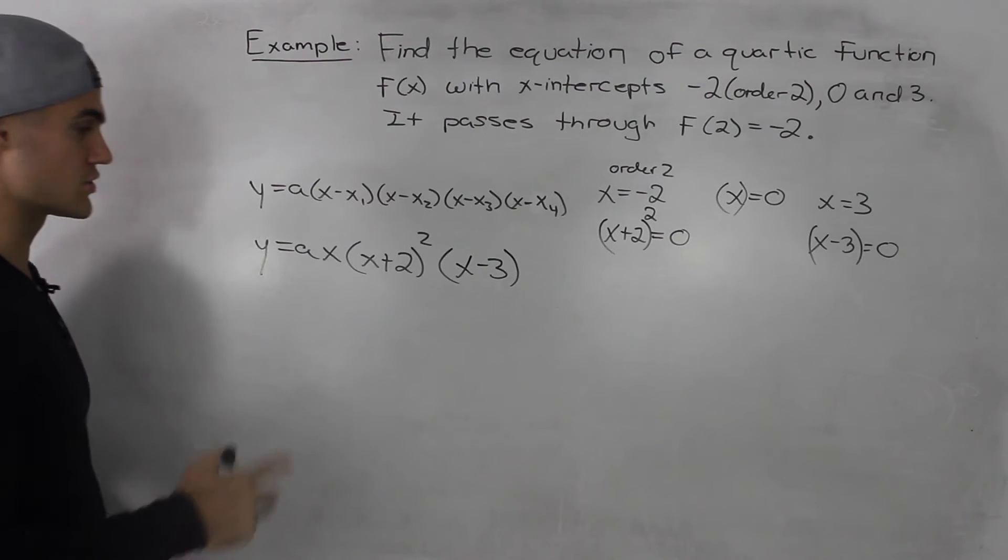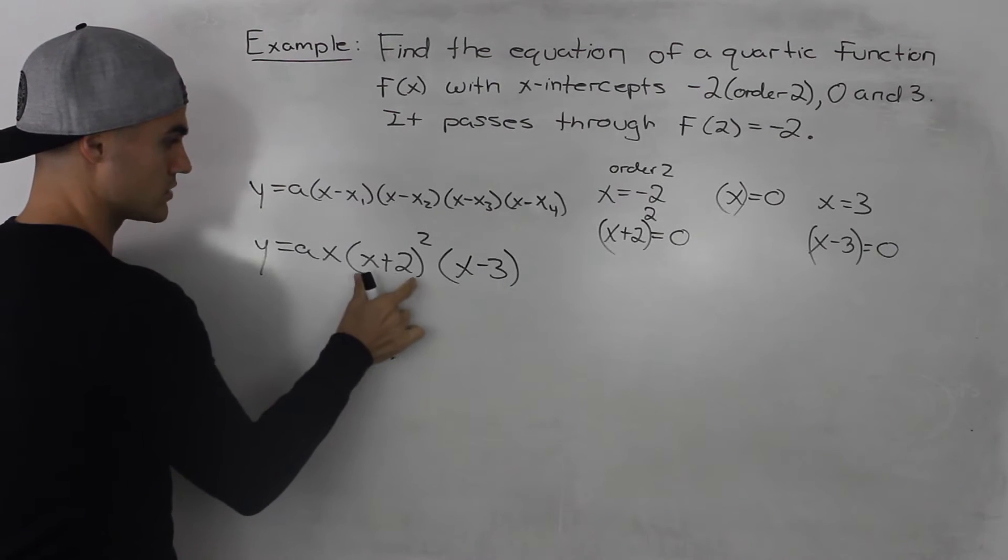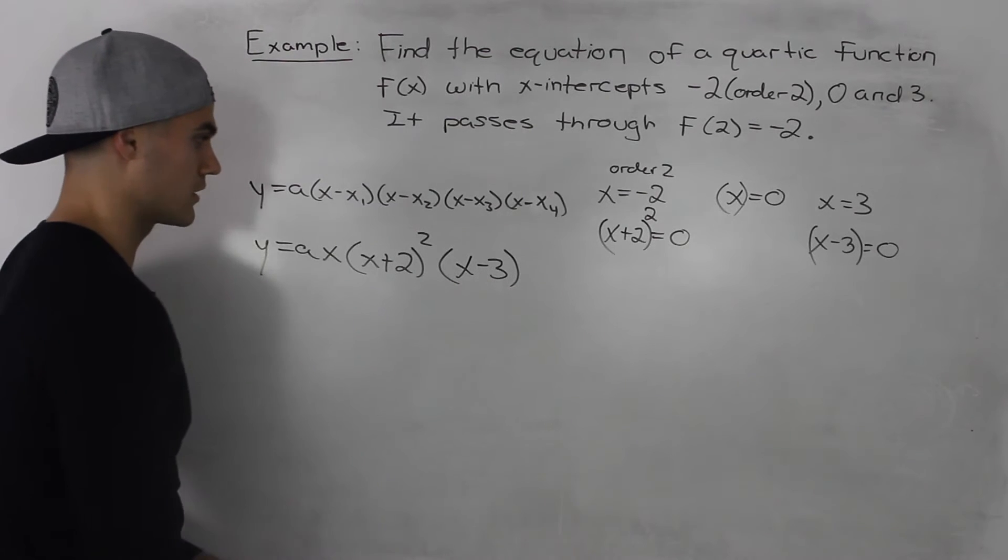So this represents a quartic function, 4 degrees. 1, 2, so that's a total of 3, and then one more, that would give us 4.